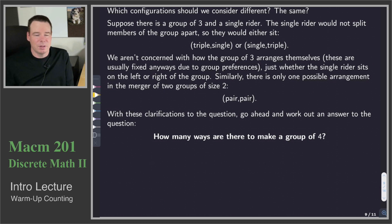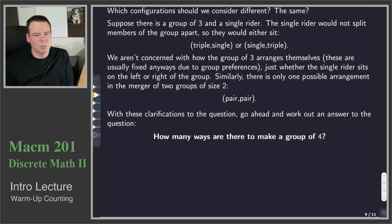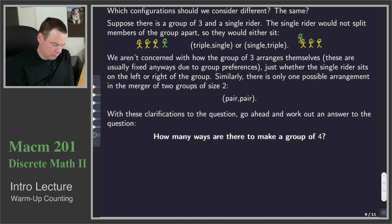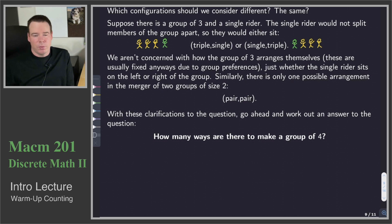Suppose we've got a group of three and then there's a single rider — someone skiing by themselves that day. How could they arrange themselves on the chair? Well, the single rider probably wouldn't mix in with the group of three; they'd probably sit to one side or the other. So these two groups would join together on the chair as either a triple-single or a single-triple. So here's our triple of riders sitting on one side, and then our single rider — in one case sitting to the right, in the other to the left. So there are two configurations.